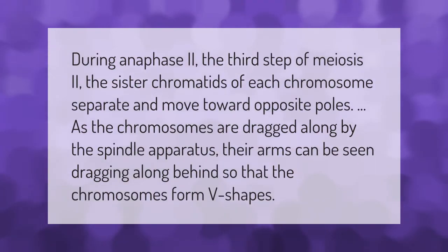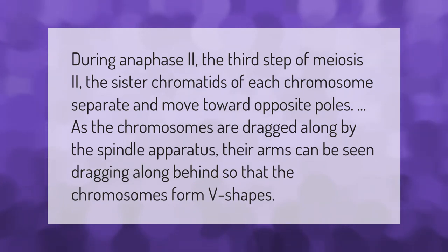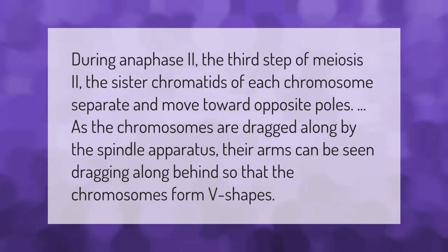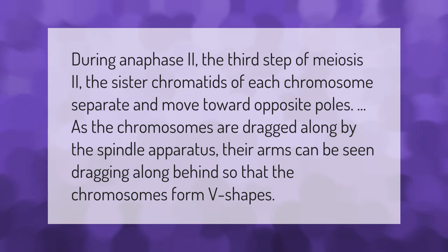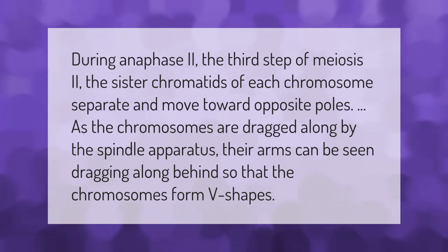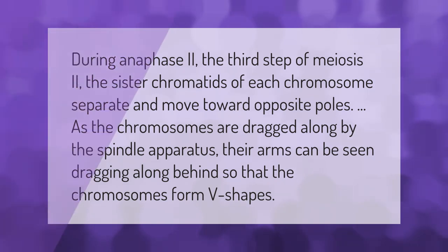During anaphase two, the third step of meiosis two, the sister chromatids of each chromosome separate and move toward opposite poles. As the chromosomes are dragged along by the spindle apparatus, their arms can be seen dragging along behind, so that the chromosomes form V-shapes.